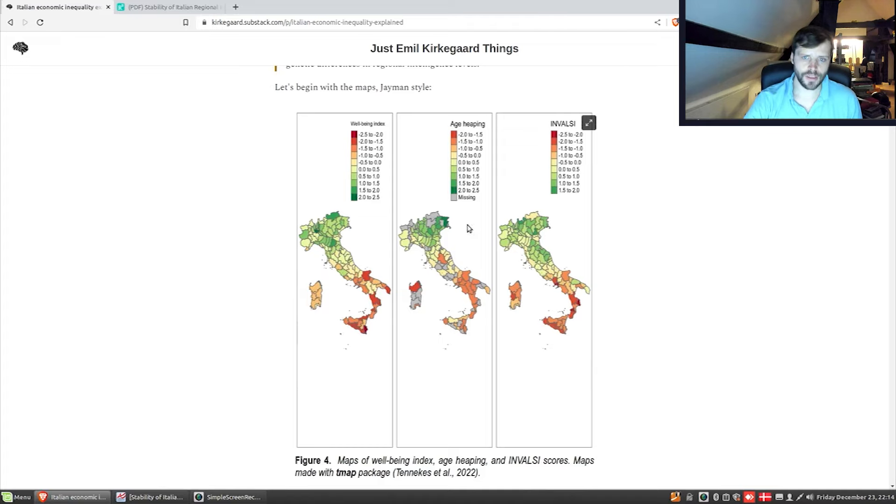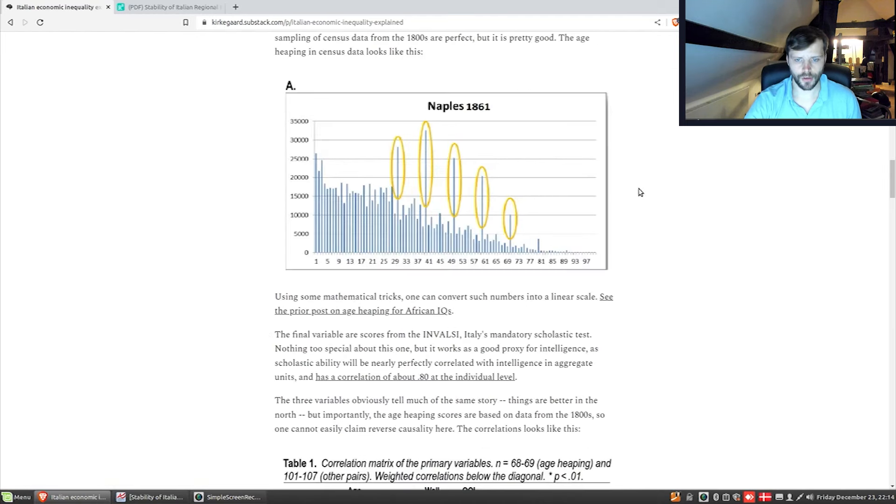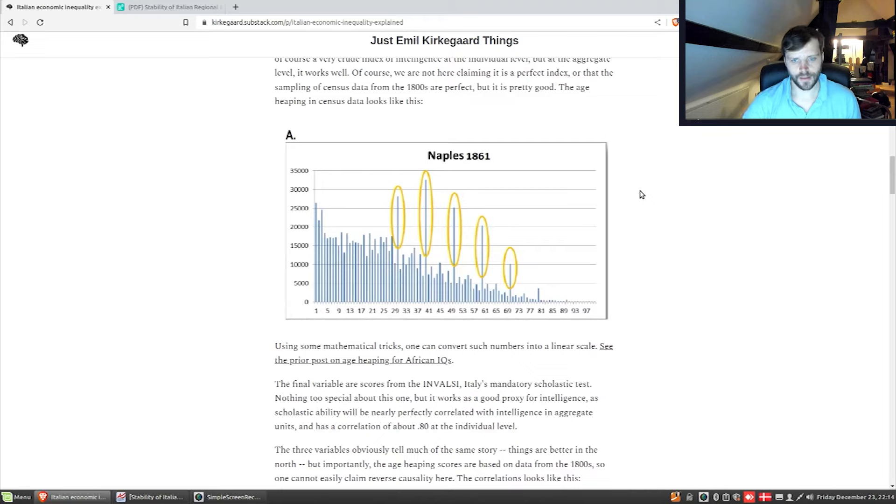Most interestingly, and the new thing about this paper is the age heaping. Age heaping, for those who recall, it looks like this. Age heaping is the tendency of innumerate people to report their own age as a rounded value. If you are living in the 1800s and you can't do mental math, you don't exactly know how old you are because you're unable to calculate the current year minus your birth year to get your age.